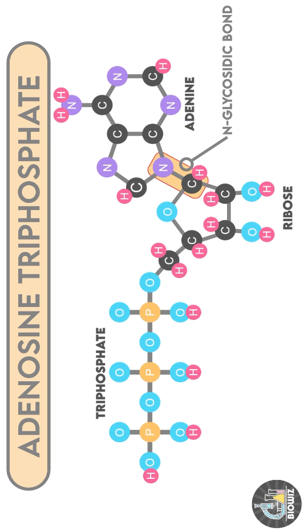The adenine is attached to the ribose sugar by a N-glycosidic bond and the triphosphate is attached to the ribose by a phosphoester bond.